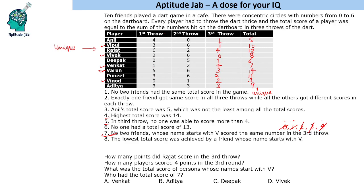This is how we complete the table — with the 3rd round scores and total scores filled in. The first question: Rajat scored 4 points in the 3rd throw. How many players scored 4 points in the 3rd round? There are only 2 people who scored 4 points in the 3rd round. What was the total score of persons whose names start with V? Adding them up: 10 plus 8 is 18, plus 21 is 39, plus 3 is 42.